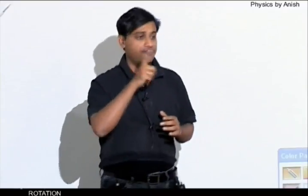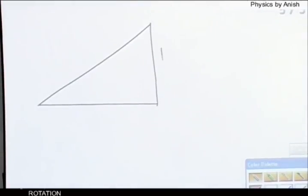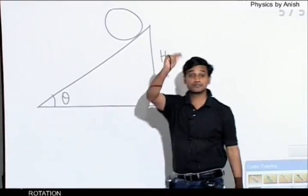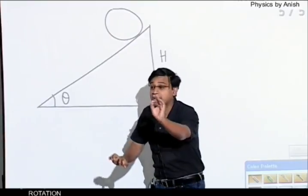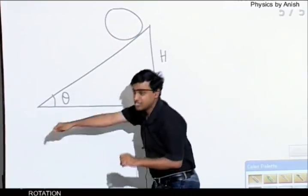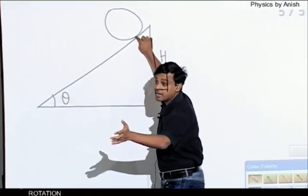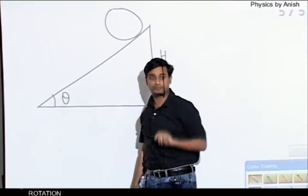Rolling motion on an inclined plane having sufficient friction. MG and normal — where can they act? MG acts at the center. With sufficient friction at the contact point, we consider all forces acting on the body during rolling.